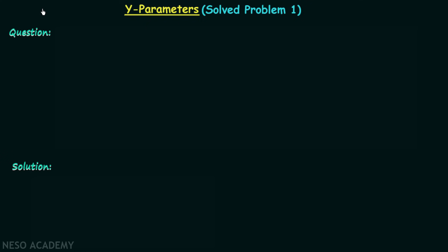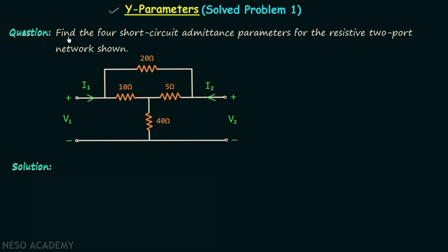In the last two lectures we performed the conversion of y parameters to z parameters and the conversion of z parameters to y parameters. Now in this lecture we will solve problem number one on the calculation of y parameters. We are required to find the four short circuit admittance parameters — the four y parameters — for the resistive two port network shown in the figure.